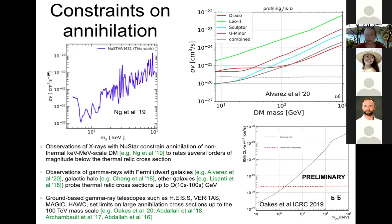We have an enormous number of excellent instruments from the X-ray band up through the MeV and GeV bands, up into the GeV band where Fermi takes over, up into the TeV and higher band where ground-based Cherenkov and water Cherenkov telescopes can place stringent constraints on the amount of gamma ray emission. We have observations of dwarf galaxies, of our galactic center, of other galaxies, and of galaxy clusters, and putting these together you can set fairly stringent constraints on photons produced by dark matter annihilation or decay over a wide mass range.